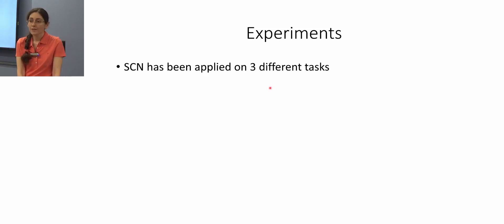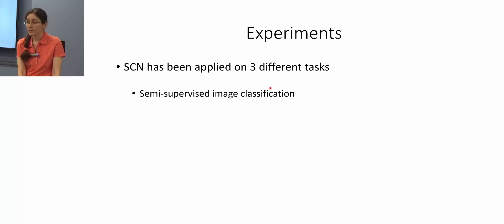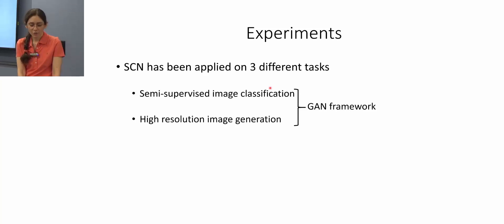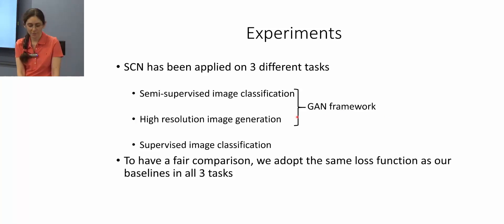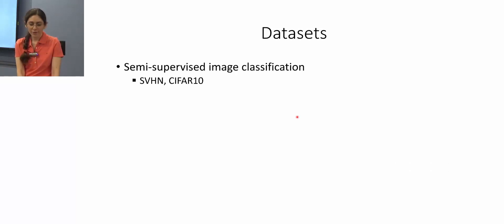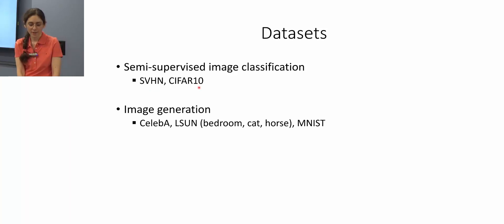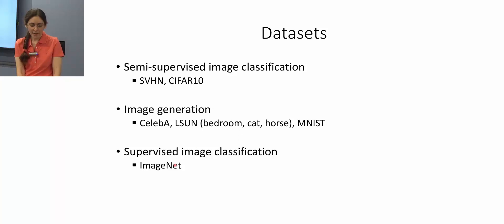For experiments, we applied subspace capsule network on three different tasks: semi-supervised image classification, high-resolution image generation — both using a GAN framework — and supervised image classification. To ensure fair comparison, we used the same loss function as all baselines. Datasets include SVHN and CIFAR-10 for semi-supervised classification, CELEB-A, three classes of LSUN, and MNIST for image generation, and ImageNet for supervised classification.